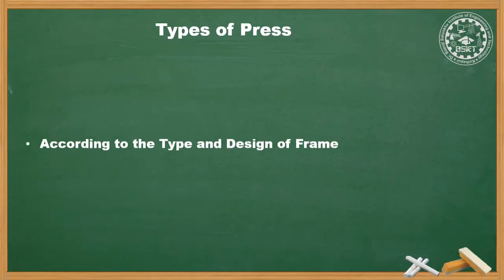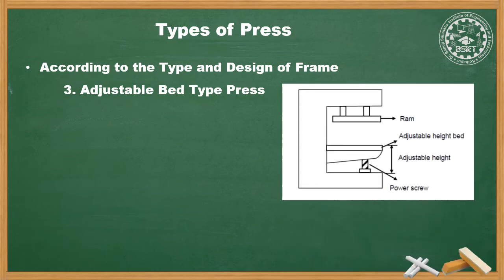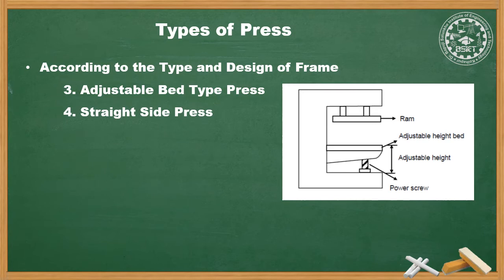Continuing further, according to the type and design of the frame, the next type is adjustable bed type press. It carries a knee type bed, hence it is also called a knee press. This knee or bed can be adjusted at desired height by moving it up and down with the help of the power screw provided below it. This type of press is used for small working. Next is straight side frame press, which is preferred in large presses having larger bed area and high tonnage capacity. Due to the straight frame, these presses have greater rigidity and enable longer strokes.